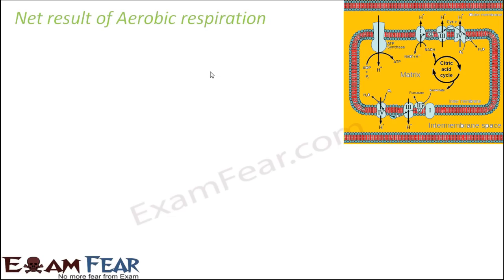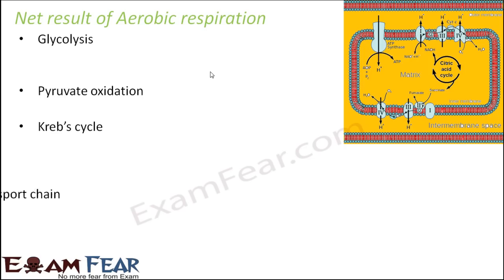So what were the different steps of aerobic respiration? Glycolysis, then pyruvate oxidation, followed by Krebs cycle, and then electron transport chain. So now let us see how many ATP molecules were produced in each of these steps.